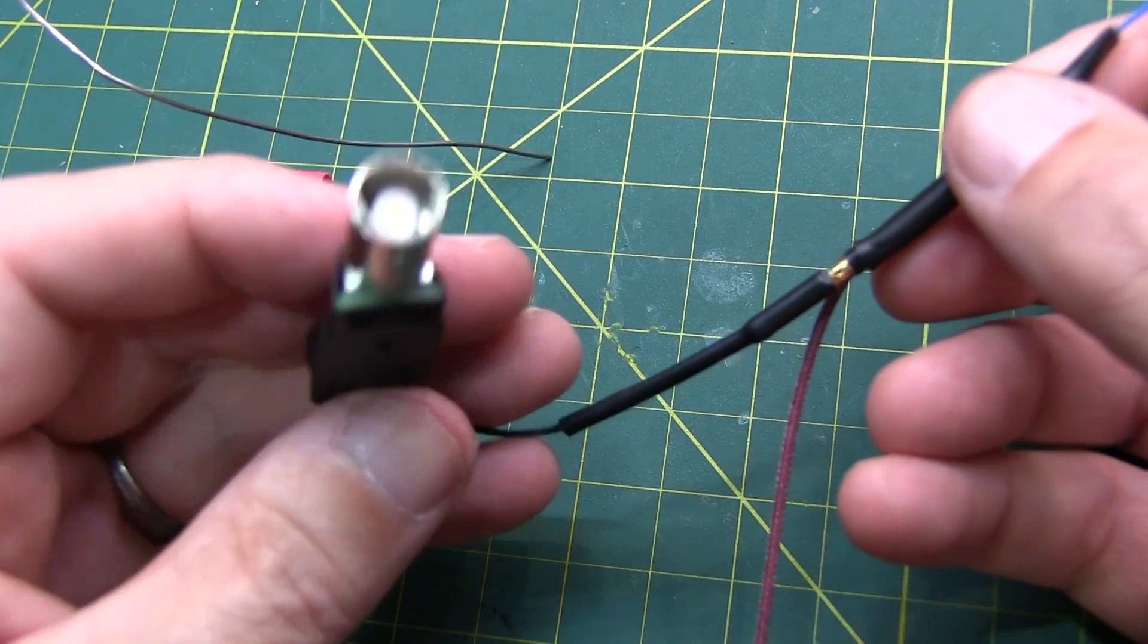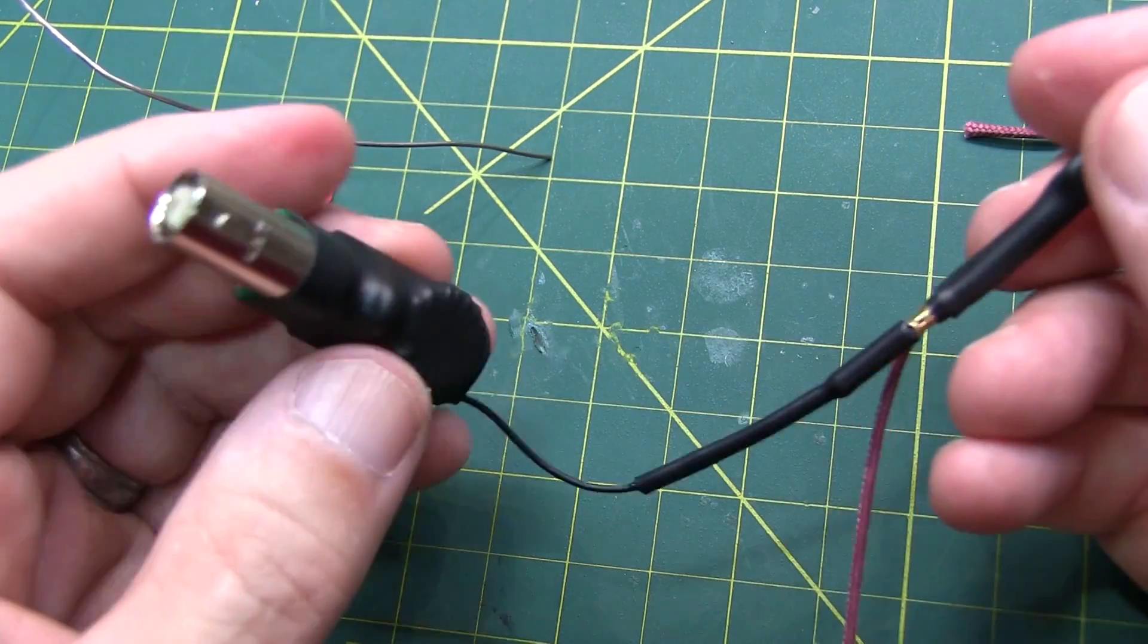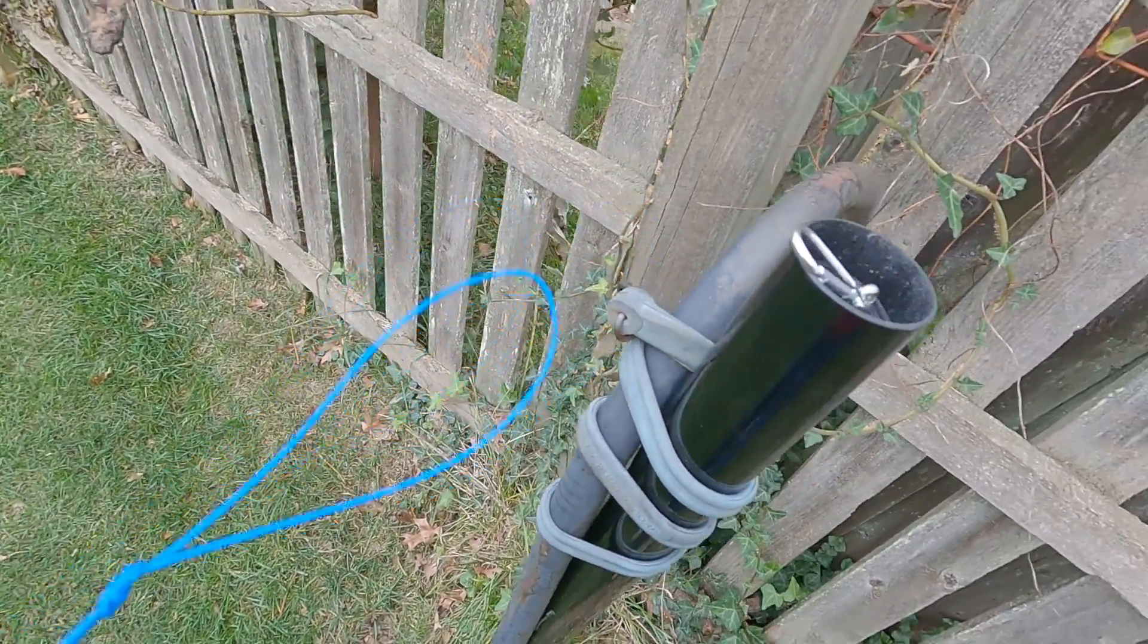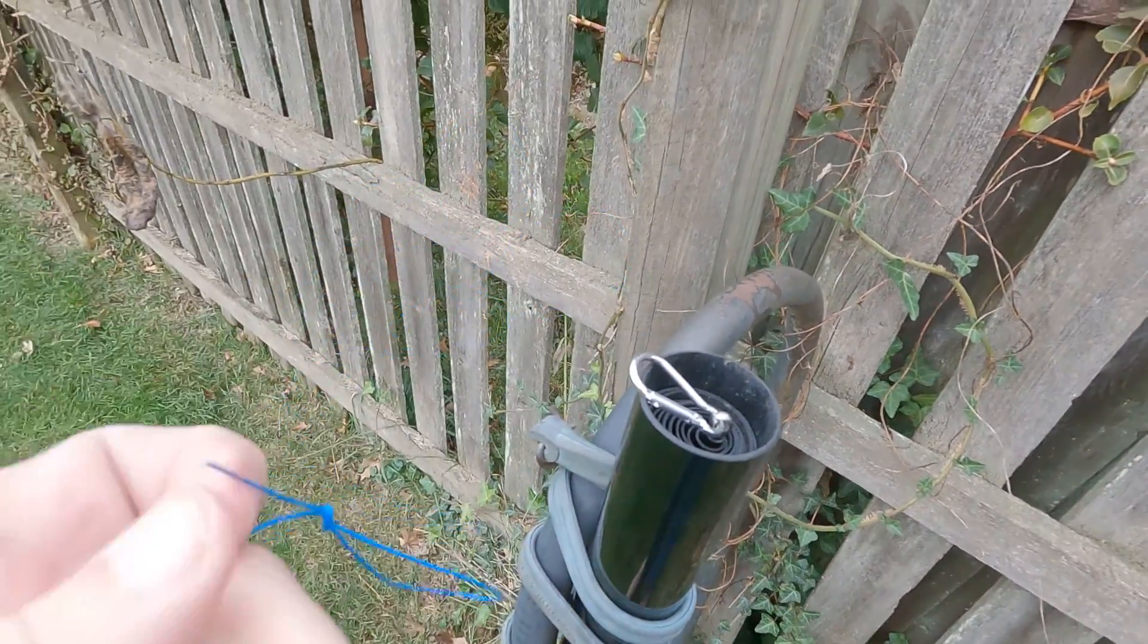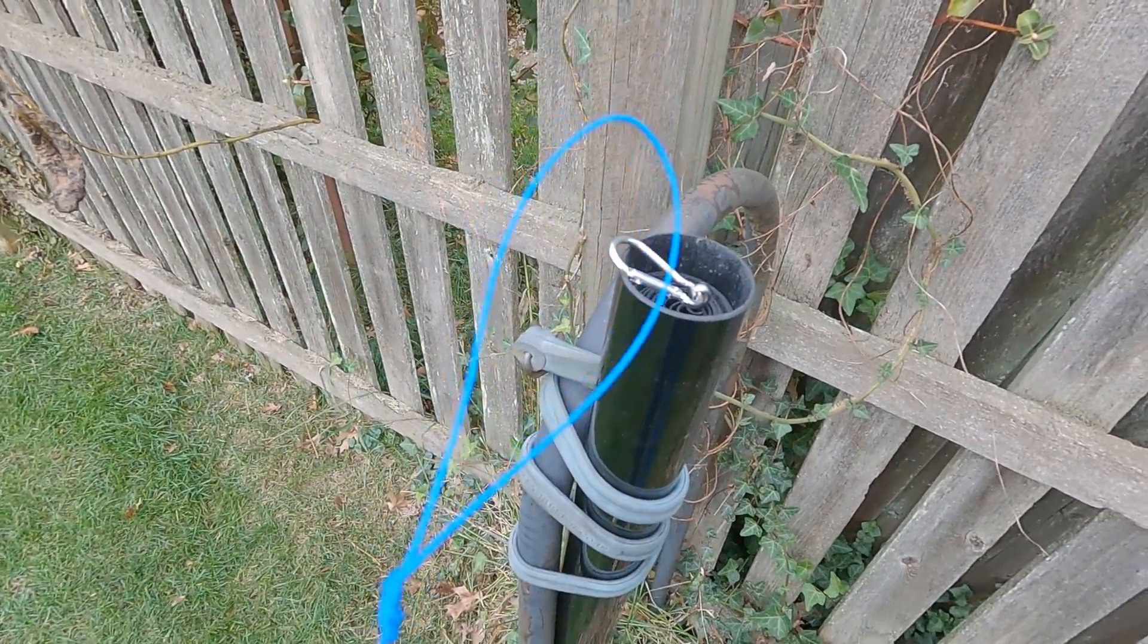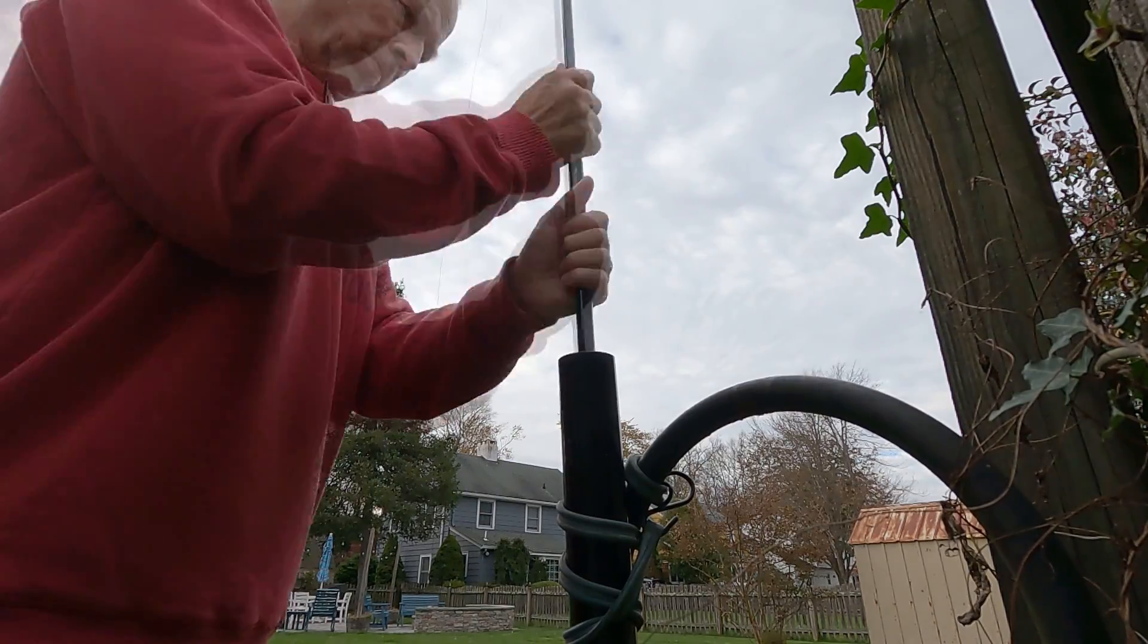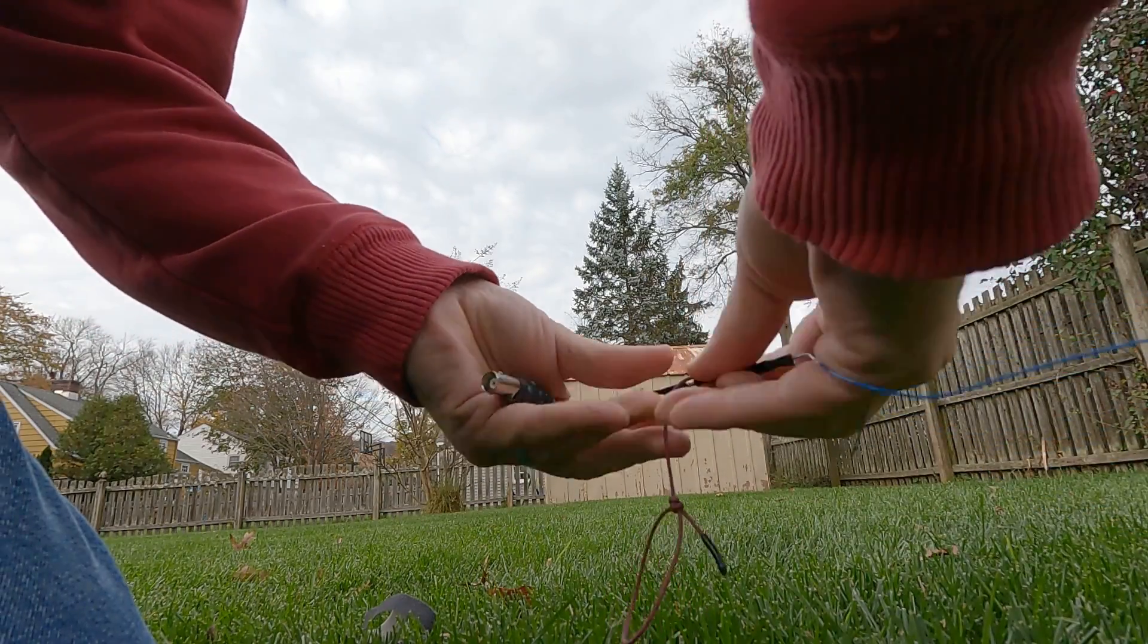I think it's time to get this thing outside, get it up in the air, and do some tuning to get the antenna all tuned up for 20 meters. Here we are in the backyard. I got the end of the wire here. I just tied a loop into it. We'll clip that onto this clip here and raise my telescoping pole to bring this up in the air. We'll make an initial measurement and see how long we are in this antenna and how much we need to shorten it to bring it in resonance for 20 meters.